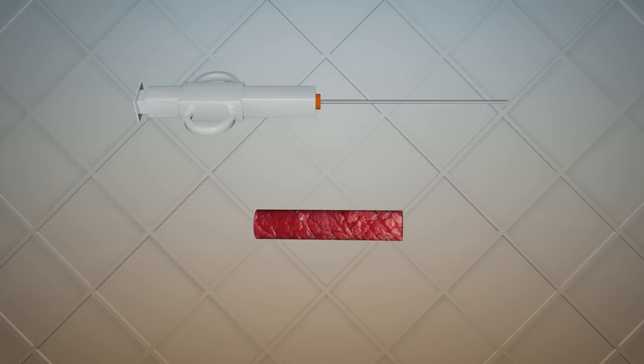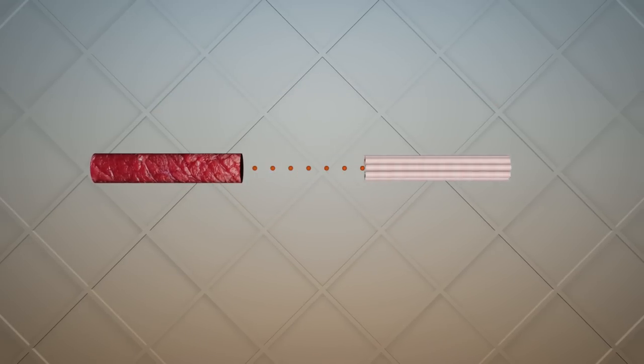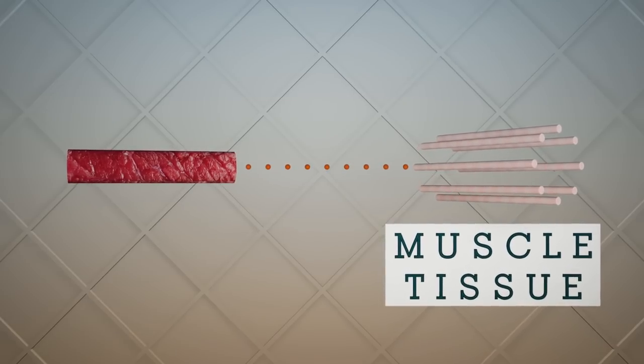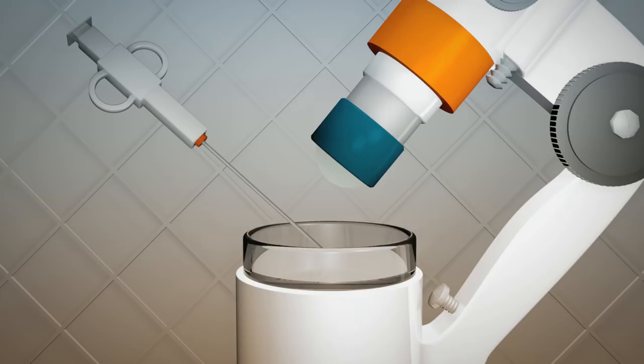Next, the tissue is cut into minuscule pieces to separate the muscle fibers and cells. And this is how it looks close up.